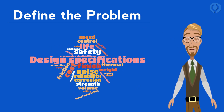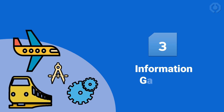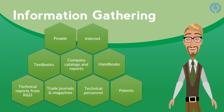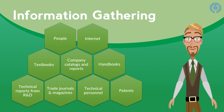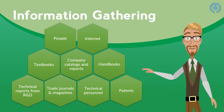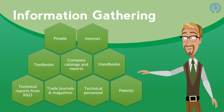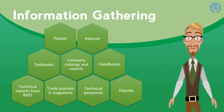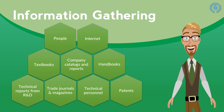There are many design specifications which depend on the design field. The third step in design process is gathering of information. Usually, no information is easily found, or sometimes there is no information. Gathering of information is a never-ending process for the best design engineers. Information can be found in textbooks, trade journals and magazines, technical reports from government-sponsored R&D, company catalogs and reports, technical personnel, and so on. Key questions in gathering information are: Where to find it? How to get it? How accurate is the information? When do I have enough information?